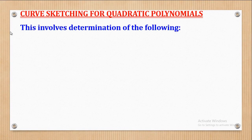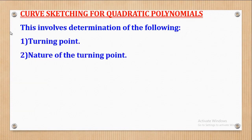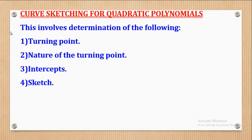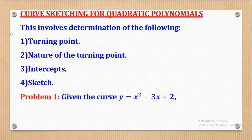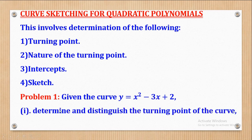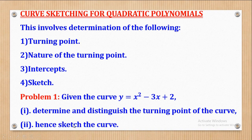This involves determination of the following: 1 is the turning point, 2 is the nature of the turning point, 3 is the intercepts, and lastly the sketch. We shall try out this problem: given the curve y = x² - 3x + 2, determine and distinguish the turning point of the curve, and sketch the curve.